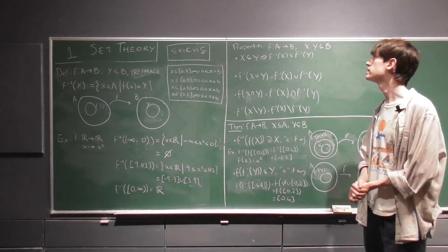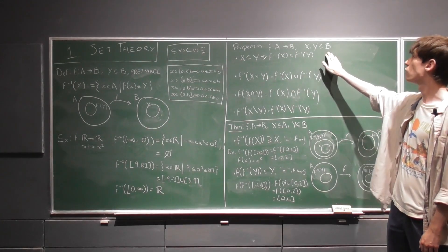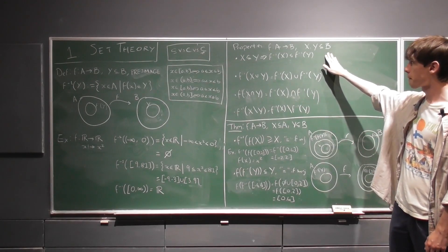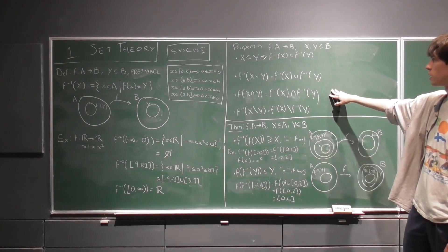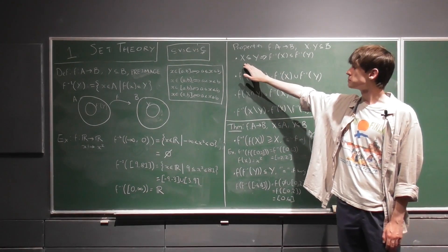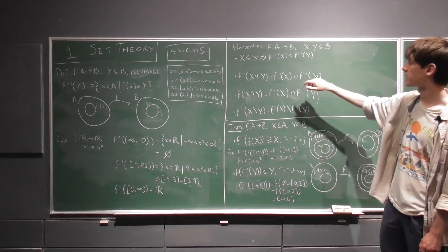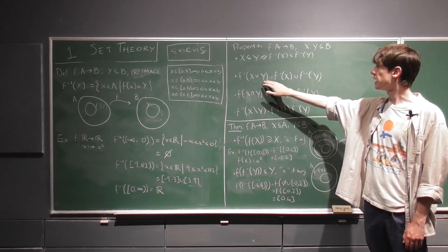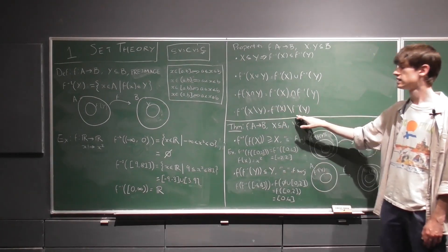OK, so some properties of pre-image. If we just take x and y as subsets of b, we can see that the pre-image is a lot easier to work with than the image because, again, subsets are preserved under the image and equality holds under unions, intersections and set differences.